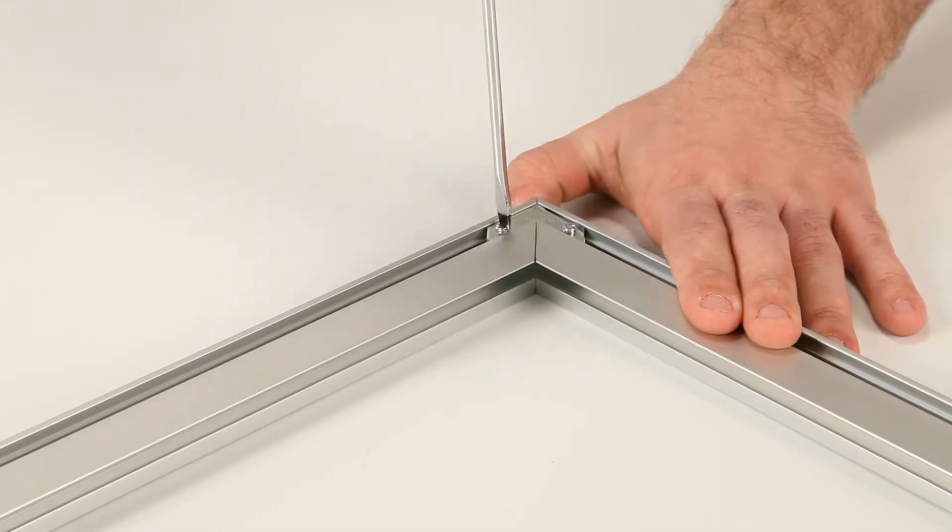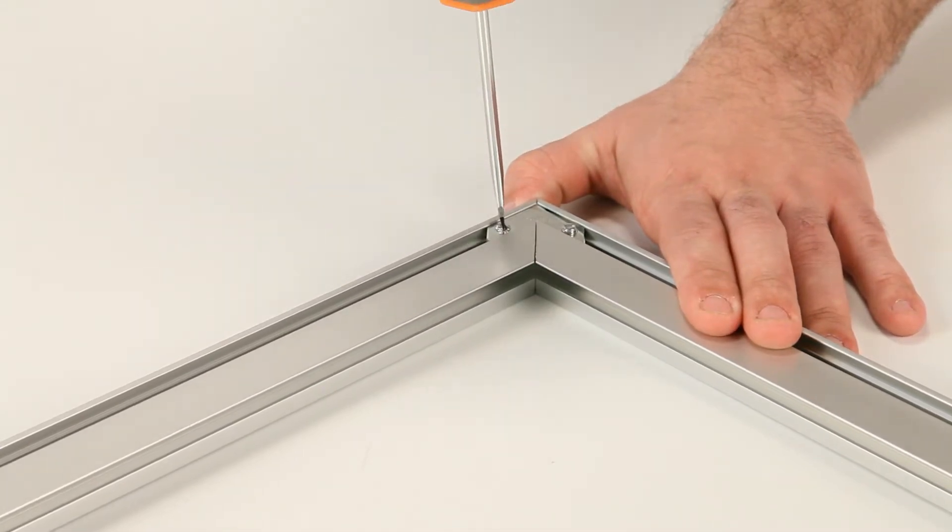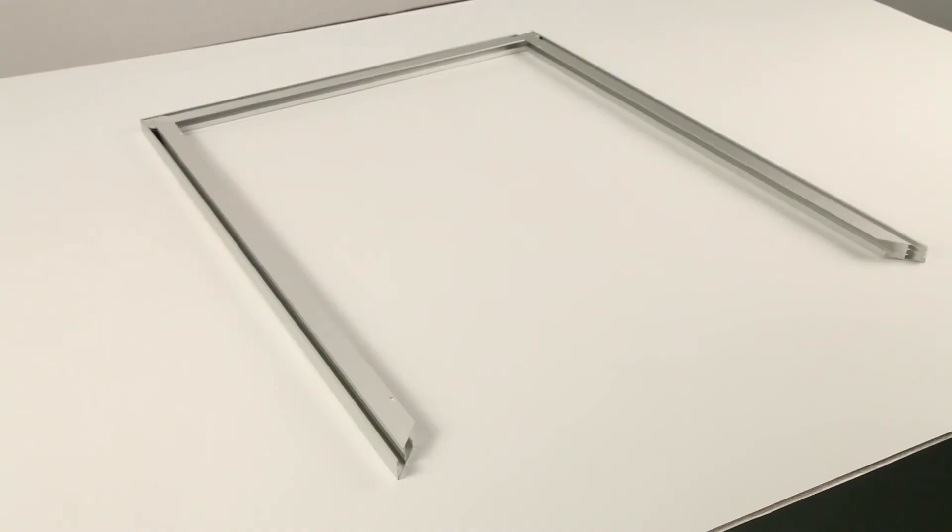Use a flathead screwdriver to tighten the screws of the top corner joining plate. Next, add the third large frame rail and secure it with angle plates.